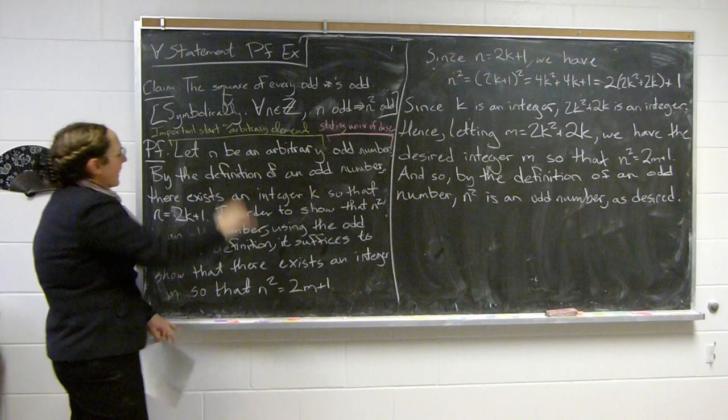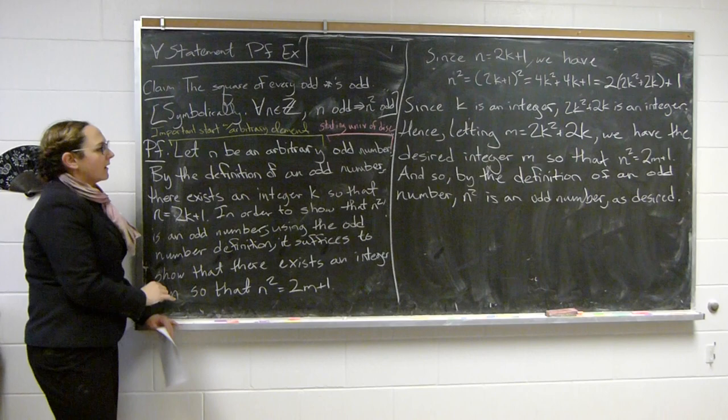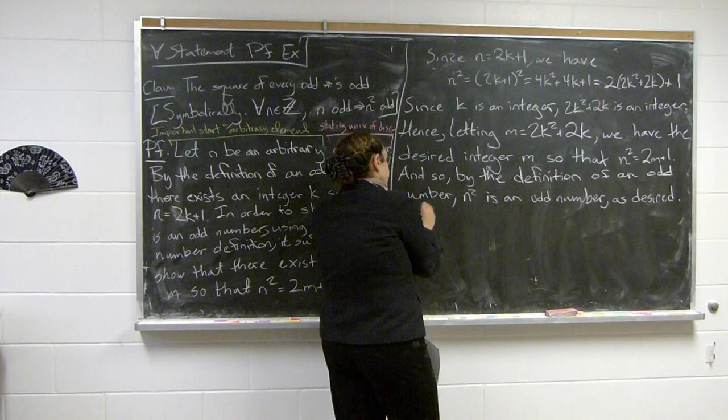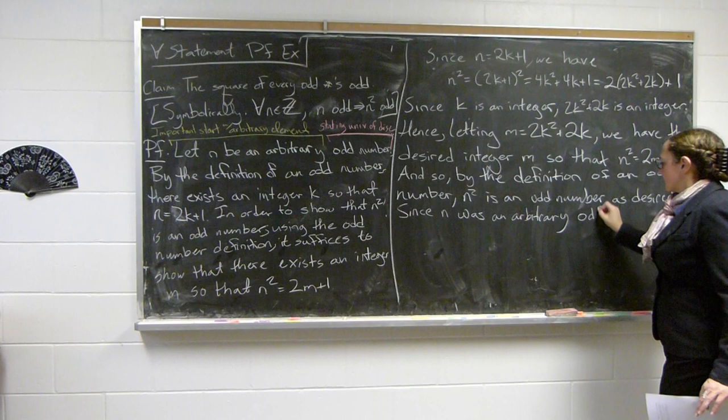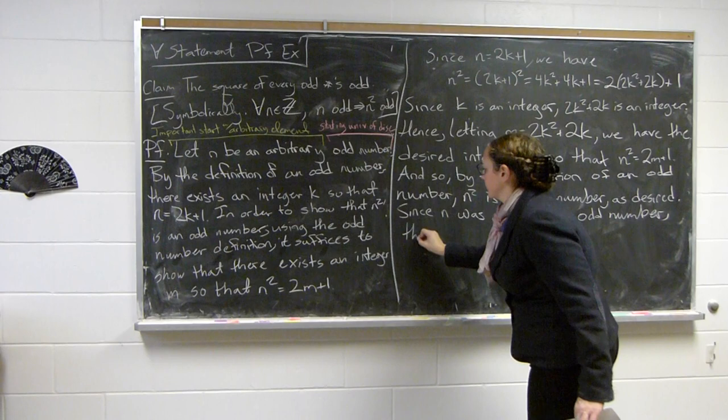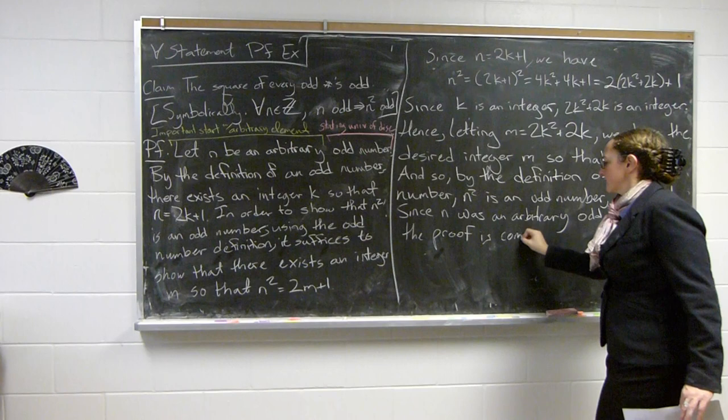Since n was an arbitrary odd number, this same proof works for all odd numbers, so the proof is complete. We write QED to mark the end.